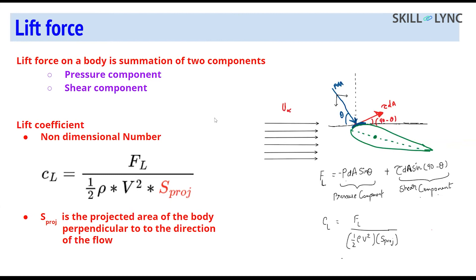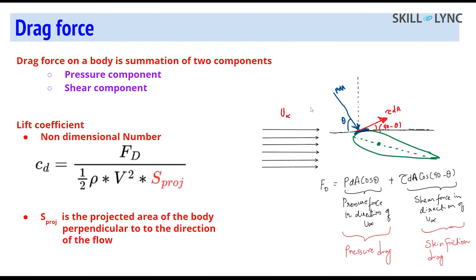Since non-dimensional numbers are widely used for comparison, we use the coefficient of lift - lift divided by dynamic pressure times area. This projected area can also be used for scaling. Similarly, resolving the component parallel to the flow gives drag force. There are two kinds of drag: pressure drag and skin friction drag.